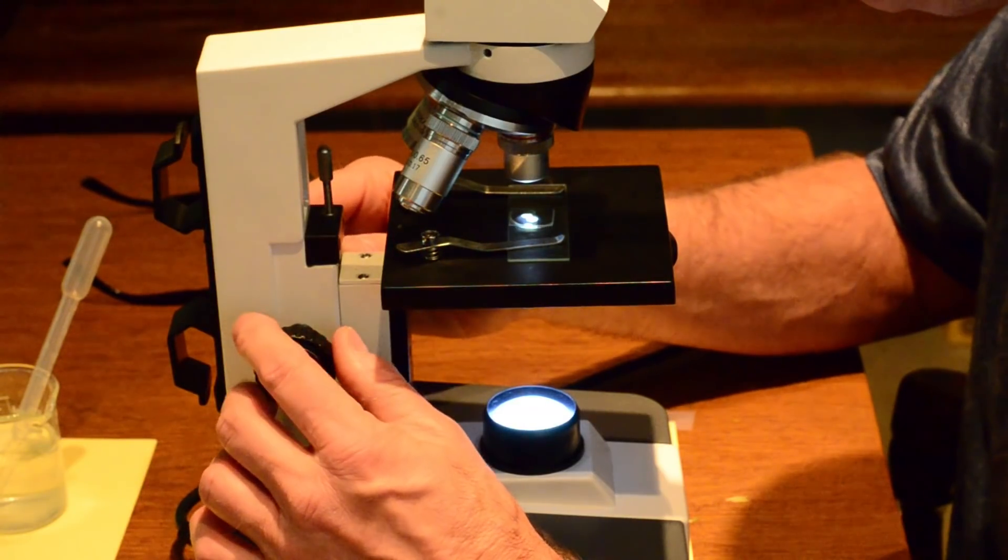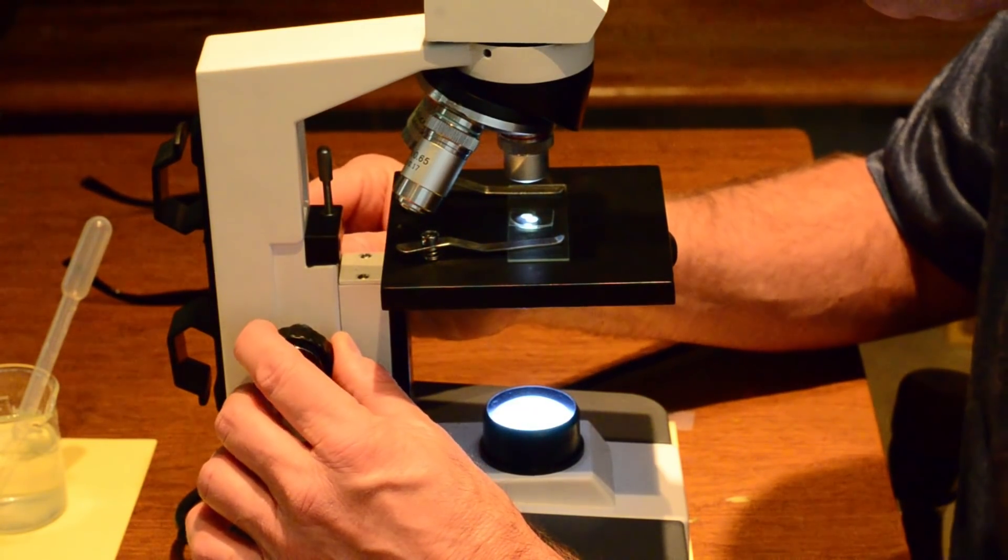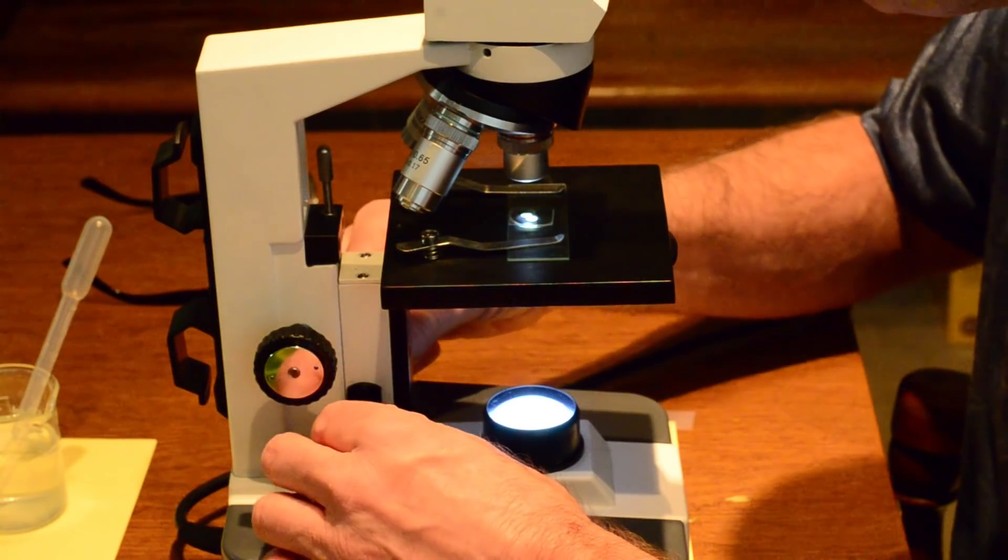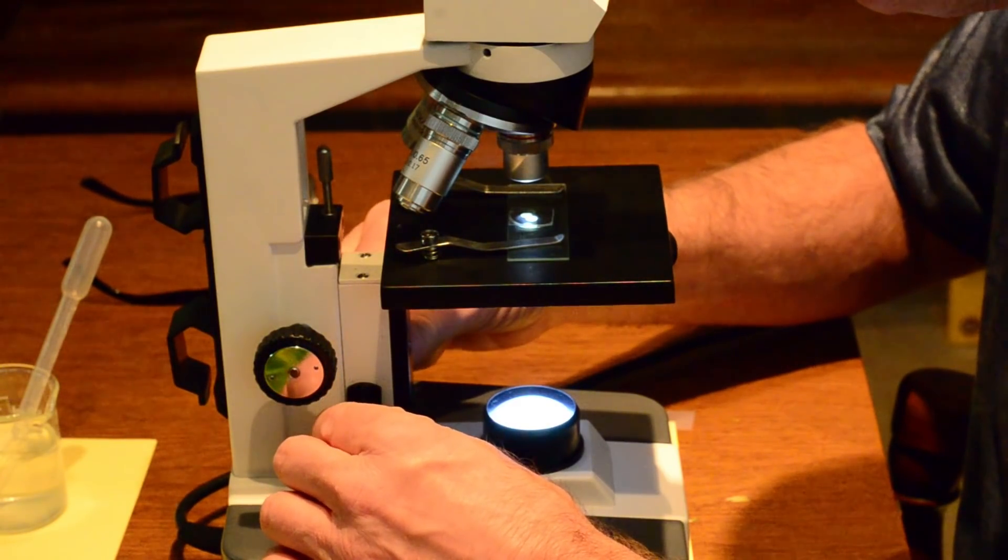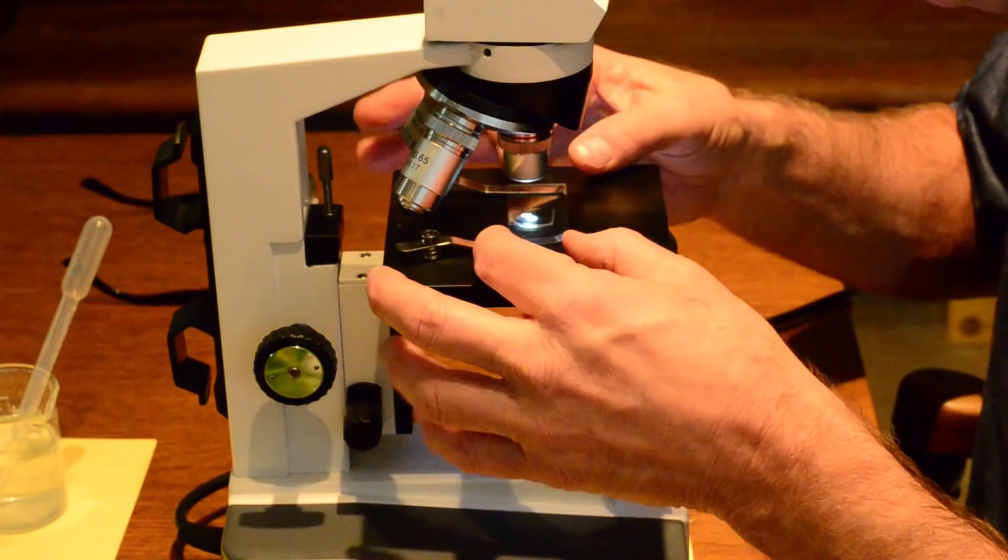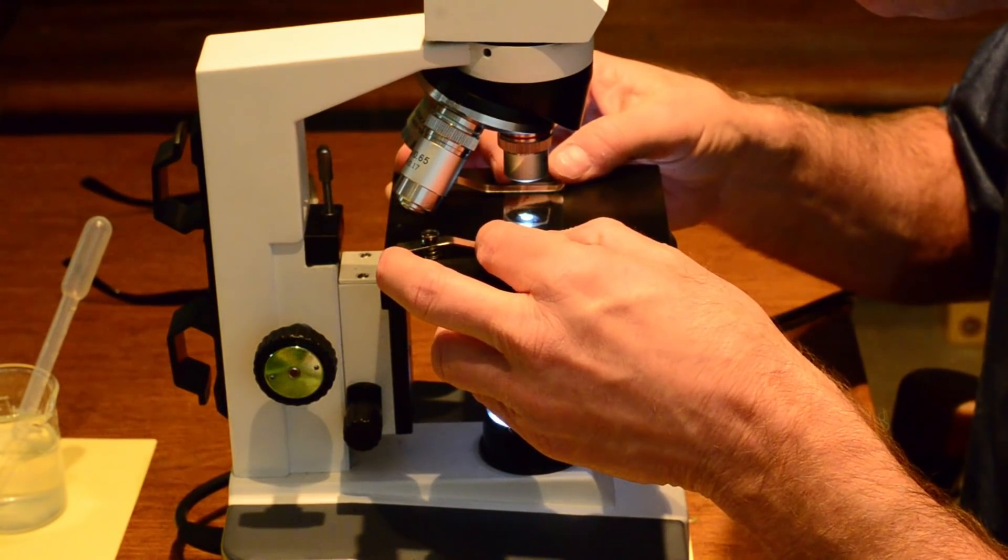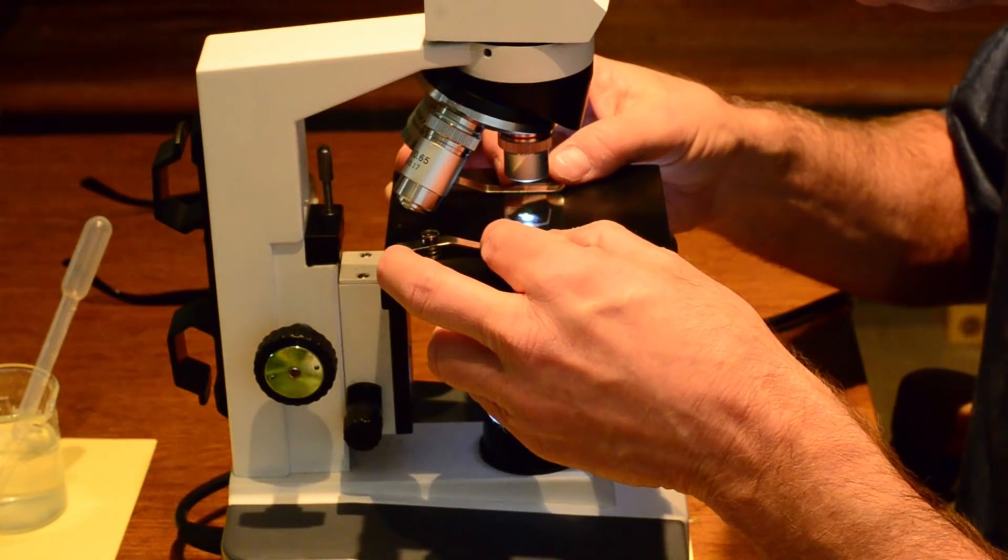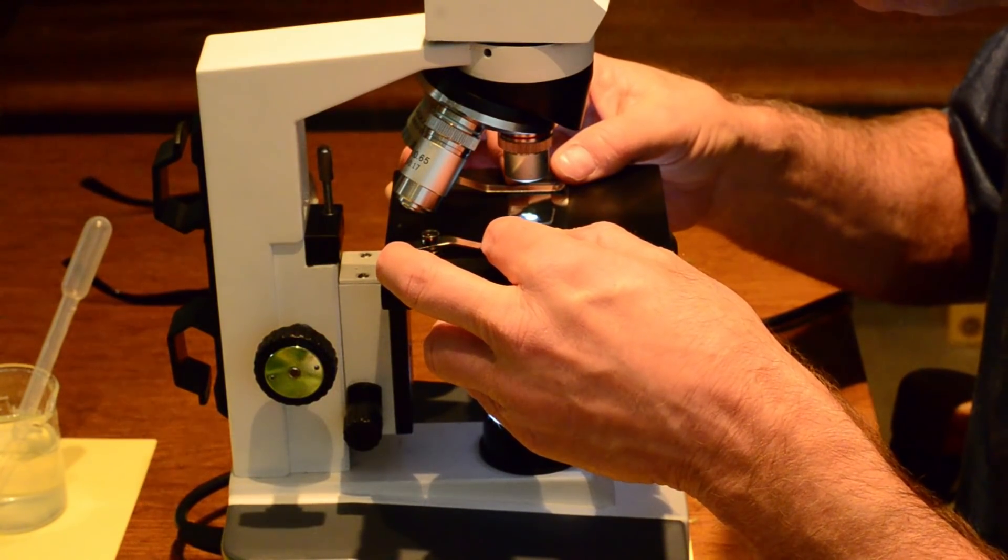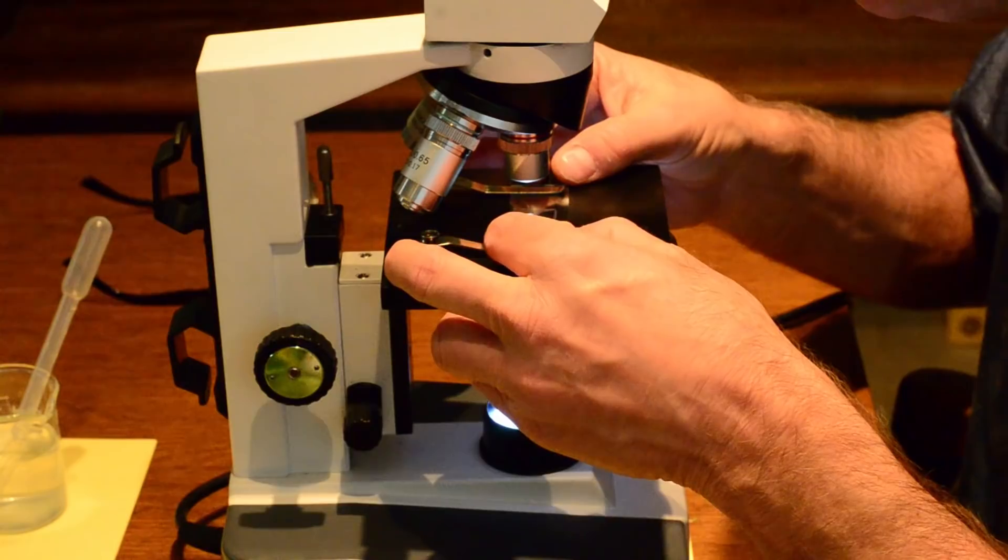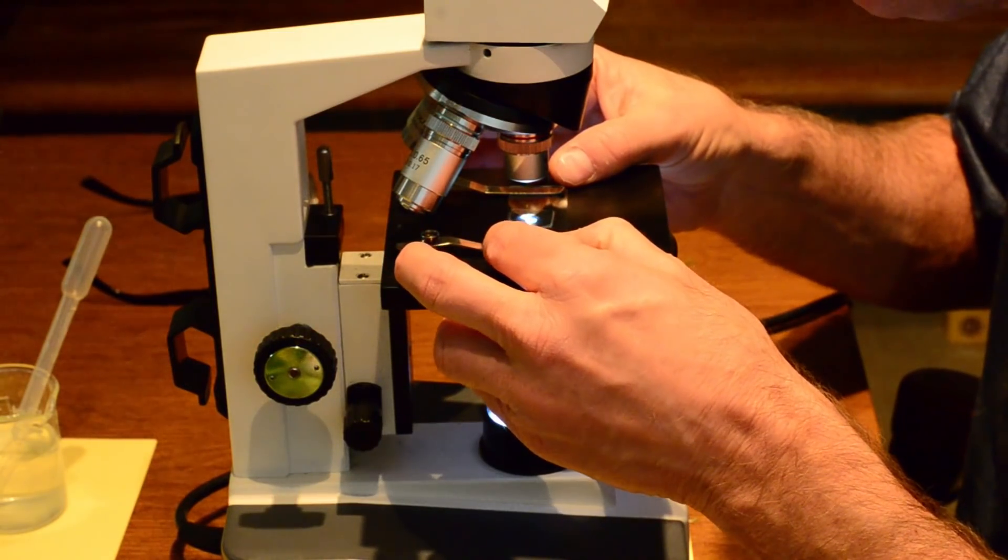And I can see that the tubes, the xylem and the phloem and some cortex cells. I want to fine adjustment, just a little bit. Wow. And I'll move it slightly to see the pith. Yeah, that is really neat, you guys. I still get excited at looking at plant tissues even though I've seen it over and over and over again.